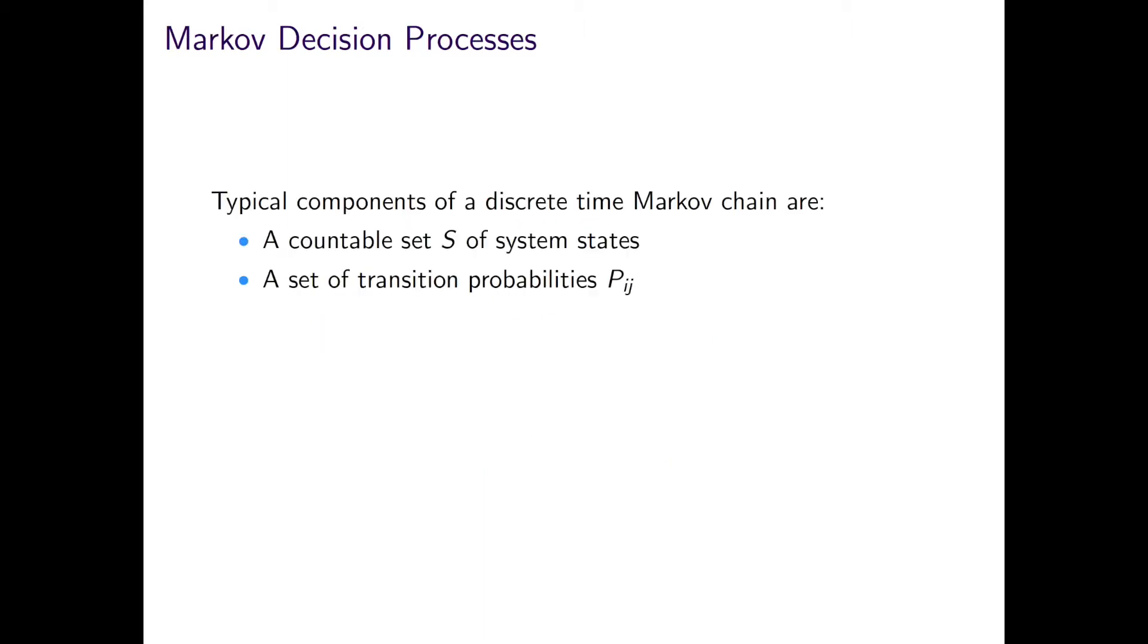Such considerations also link neatly to Markov decision processes, or MDPs. Previously, we have looked at discrete Markov chains, which have a set of states and transition probabilities. In order to augment this into an MDP, we include aspects of costs or reward, and a set of actions associated with each state.